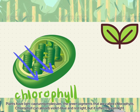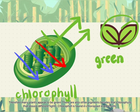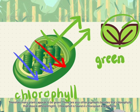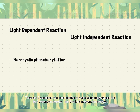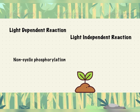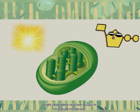Chlorophyll can absorb different light, but it reflects green light. Therefore, many plants appear to be green. There are also other pigments besides chlorophyll that absorb different lights. Chlorophyll is found in chloroplasts in plant cells. There are two regions that act together to make up photosynthesis: the light-dependent region and the light-independent region. In this video, we are highlighting the light-dependent region, precisely the non-cyclic phosphorylation.